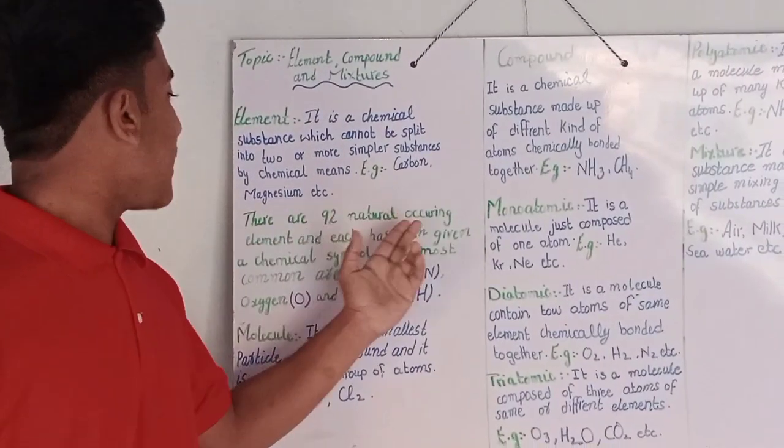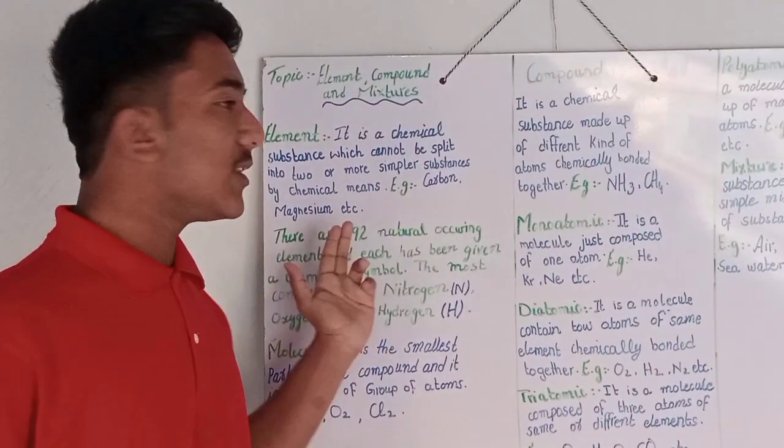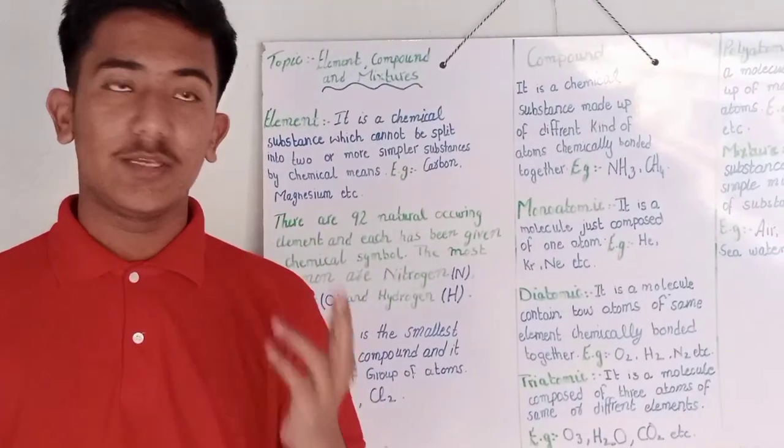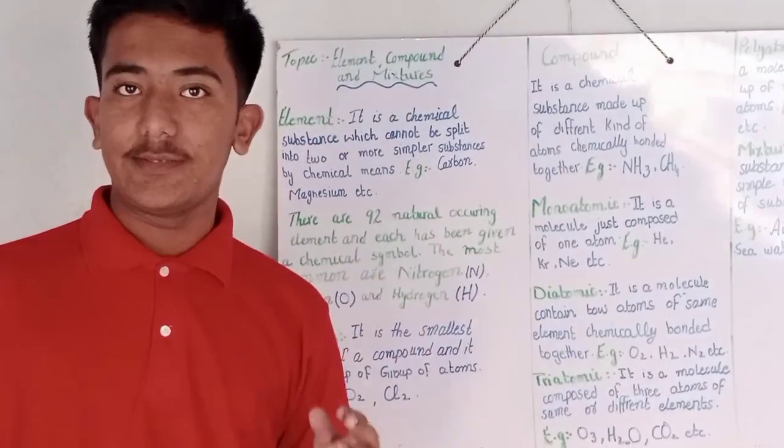There are 92 naturally occurring elements and each has been given a chemical symbol in one periodic table. The most common are nitrogen, oxygen, and hydrogen.